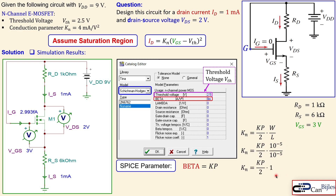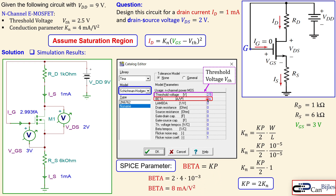Since W/L equals one, kn equals kp divided by two, meaning kp equals two times kn. Therefore the kn value must be multiplied by two to get kp for the SPICE model — that's why we enter eight milliamps per square volt instead of four. If kn were six milliamps, you would enter twelve. The threshold is set as given, and the remaining parameters are set to zero for ideal conditions.